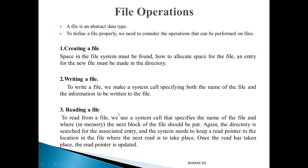Next is about file operations. A file is just an abstract data type, so to define the file properly, we need to define the operations which can be performed on files. There are six different types of operations, and the OS provides various system calls to implement them — for example, the open system call, the read system call, the write system call, and so on.